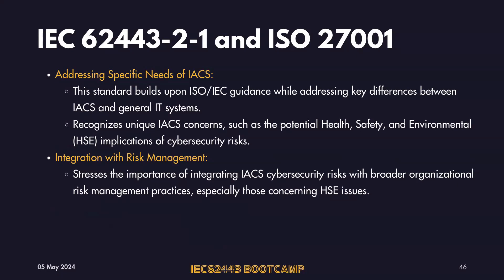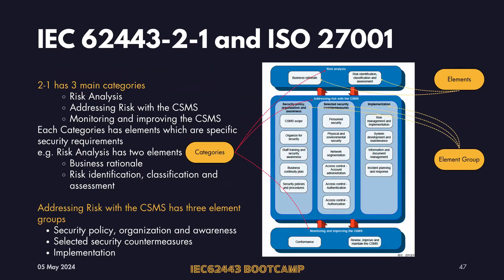IEC 62443 focuses on the specific needs of ICS, and that's the key difference from ISO 27001. IEC 62443 recognizes the importance of health hazards, safety requirements, and HSE implications on the cyber security part — what could go wrong if an industrial automation and control system malfunctions or is hit by malware. All of these things are considered when designing the cyber security process, with very good integration with the risk management framework.